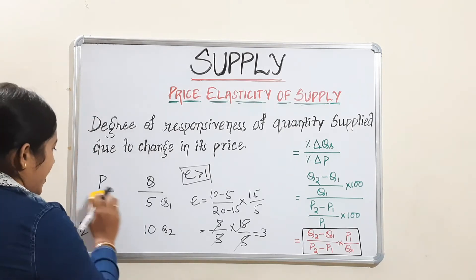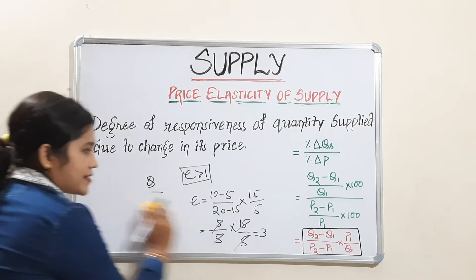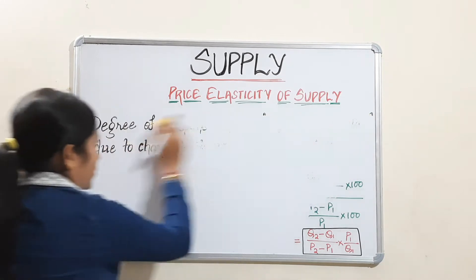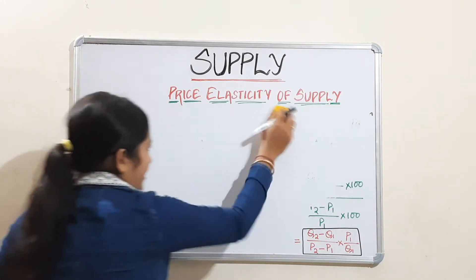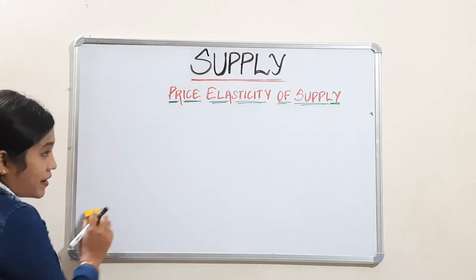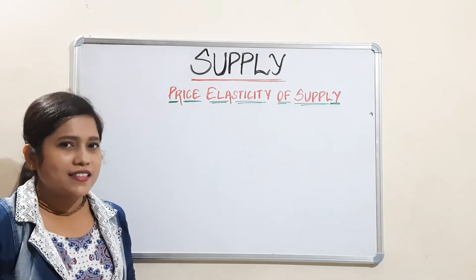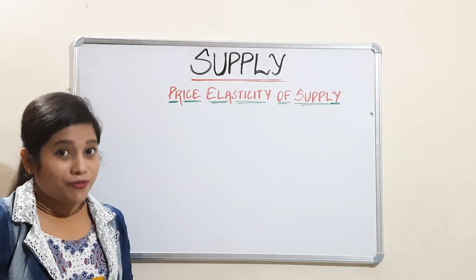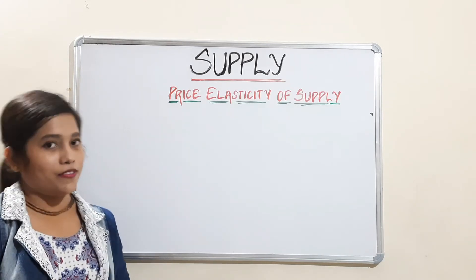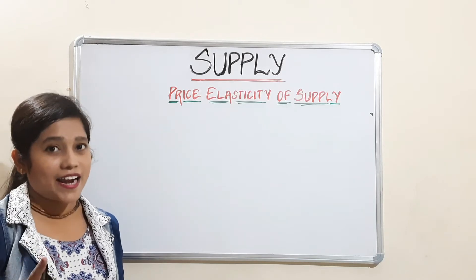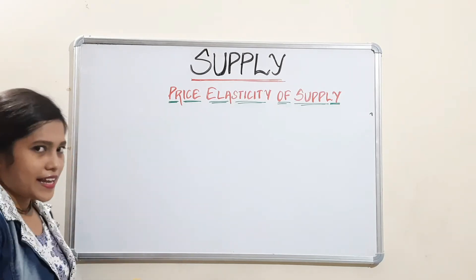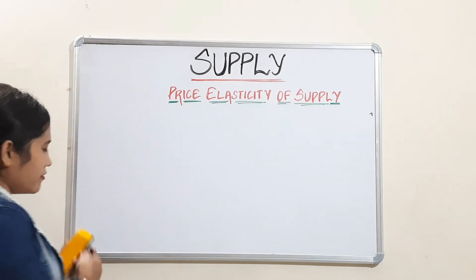So that covers the price elasticity of supply. Now we will quickly cover the degrees of elasticity. The degrees of elasticity — already covered in the demand chapter — are: perfectly elastic, relatively elastic, perfectly inelastic, relatively inelastic, and unitary elastic. Just like the demand chapter, we will cover these quickly.